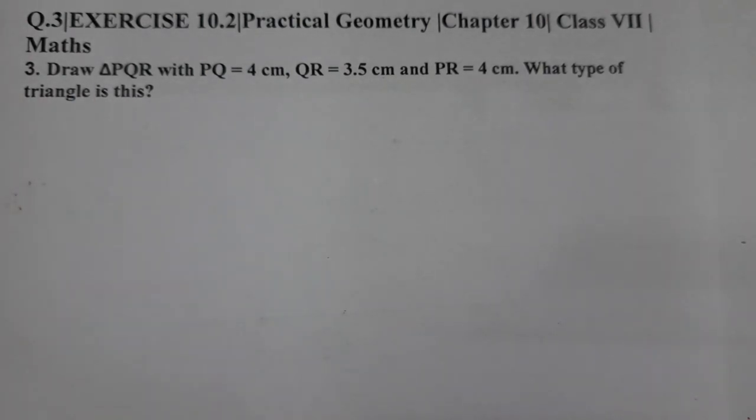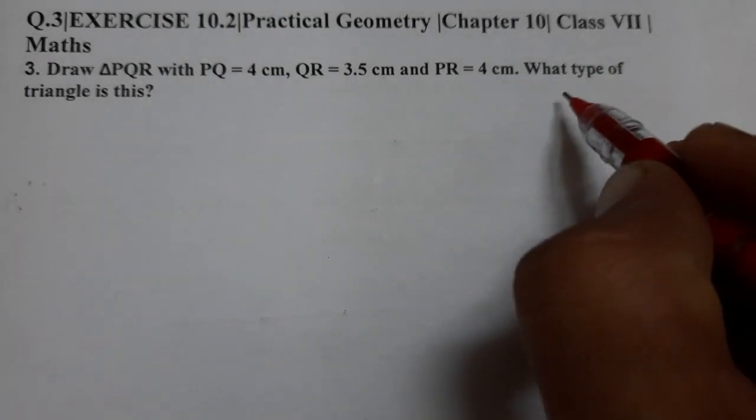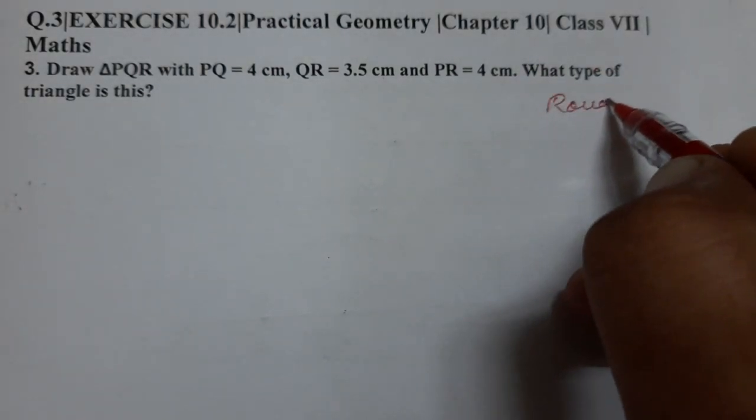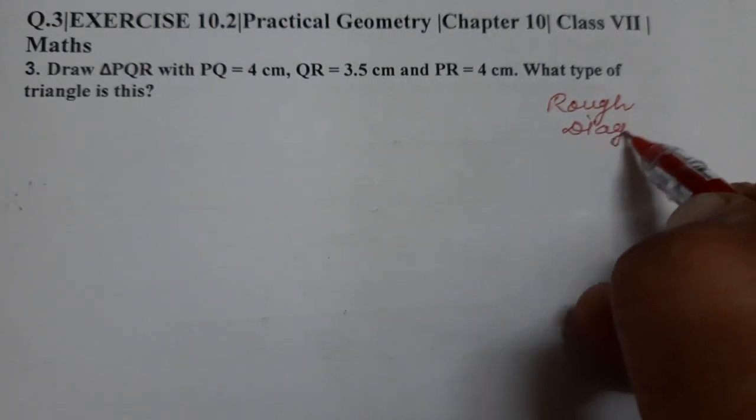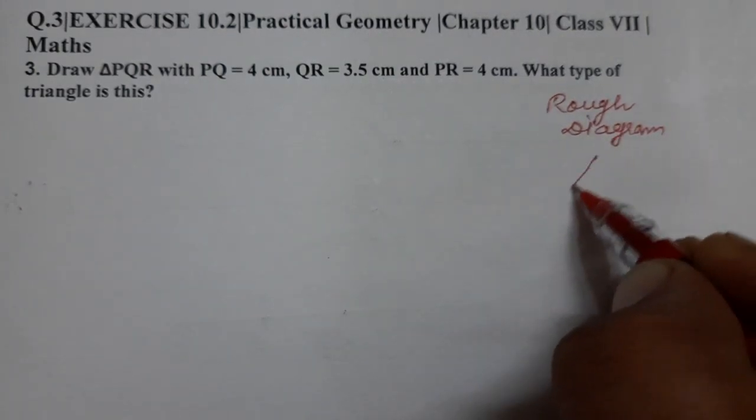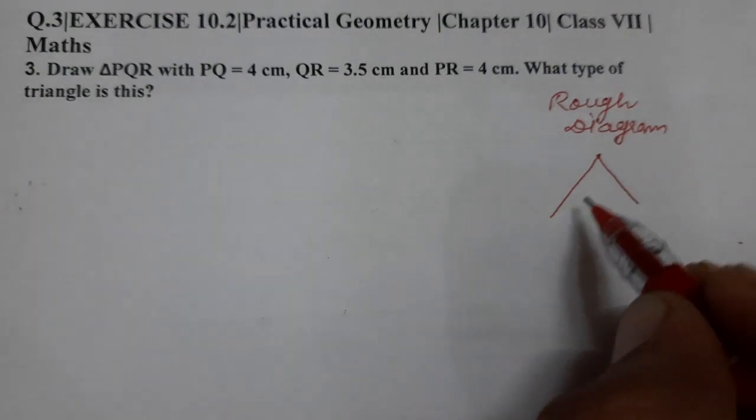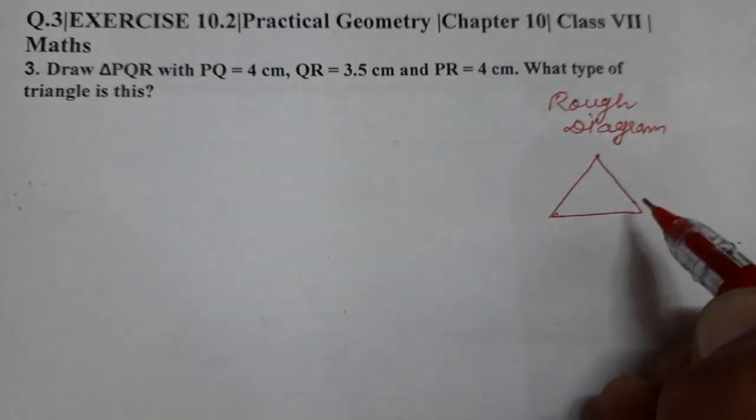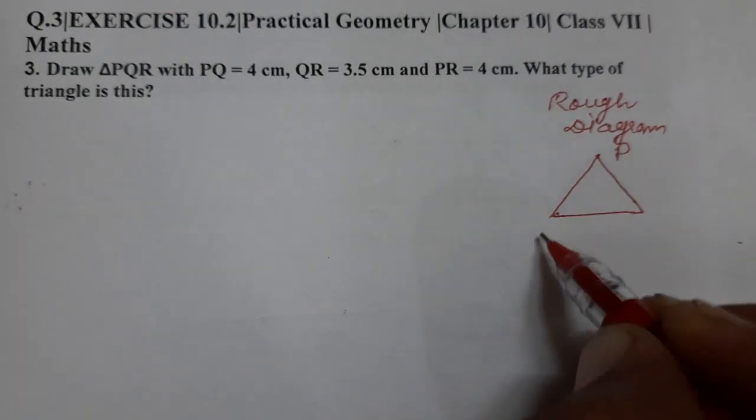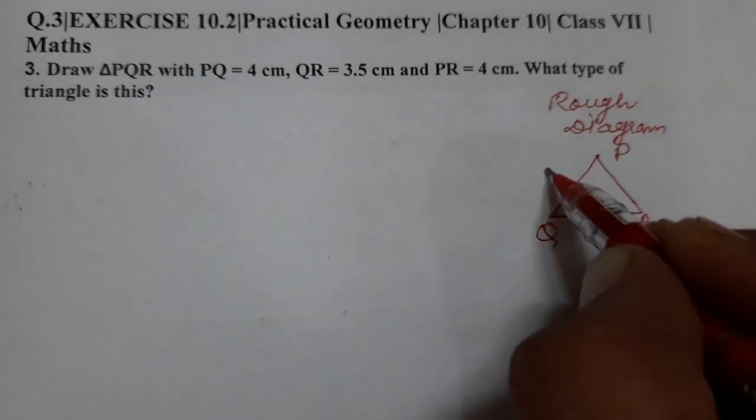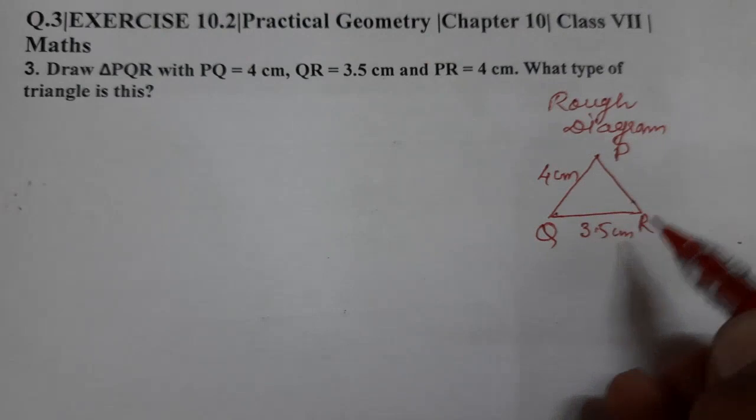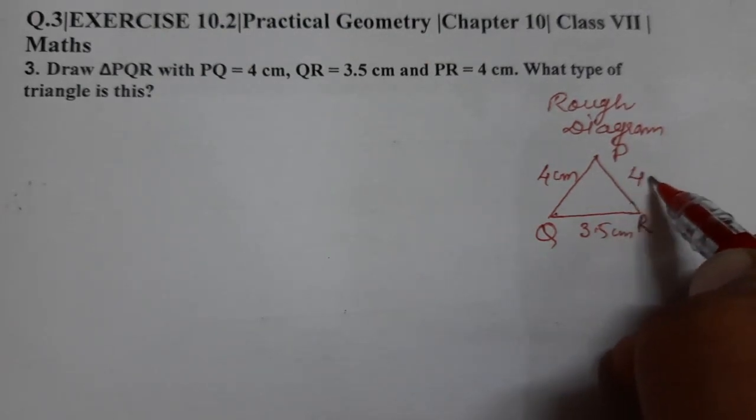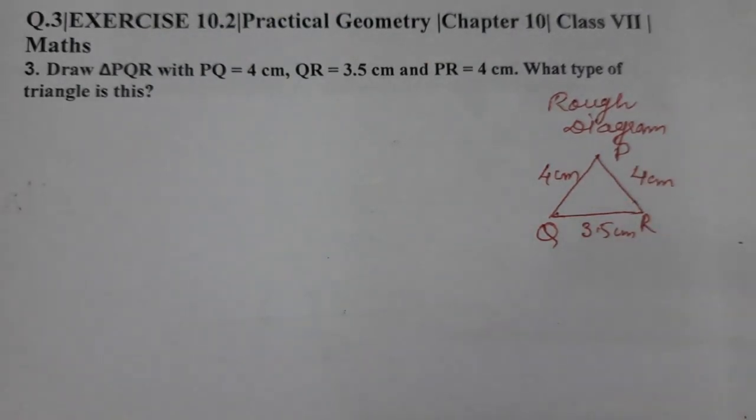First of all we'll make one rough diagram. We'll start with rough diagram only and we'll label it everything so that we'll get the exact figure. Name it PQR and PQ is 4, QR 3.5, and PR is 4 centimeter. This triangle we have to make.